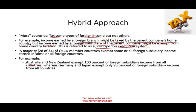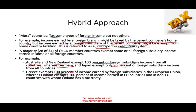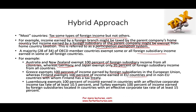Countries vary in their exemption approach. Australia and New Zealand exempt 100% of foreign subsidiary income from all countries. Germany and Japan exempt 95% of that income. Greece exempts 100% of income earned by a foreign subsidiary in the EU, while Finland exempts 100% of income from EU countries and non-EU countries with which Finland has a tax treaty. Luxembourg exempts 100% of income from countries with an effective corporate tax rate of at least 10.5%, and Turkey requires at least 15%.